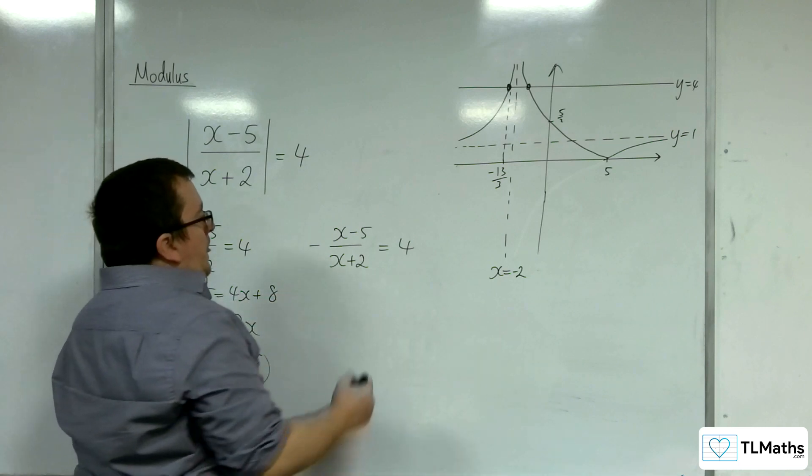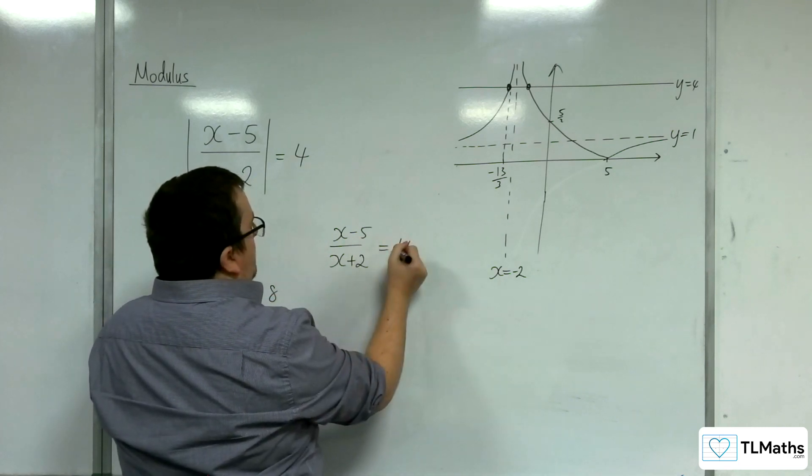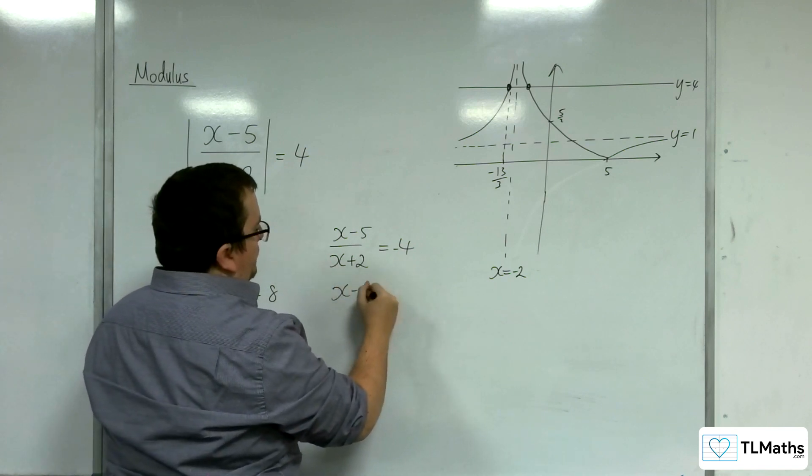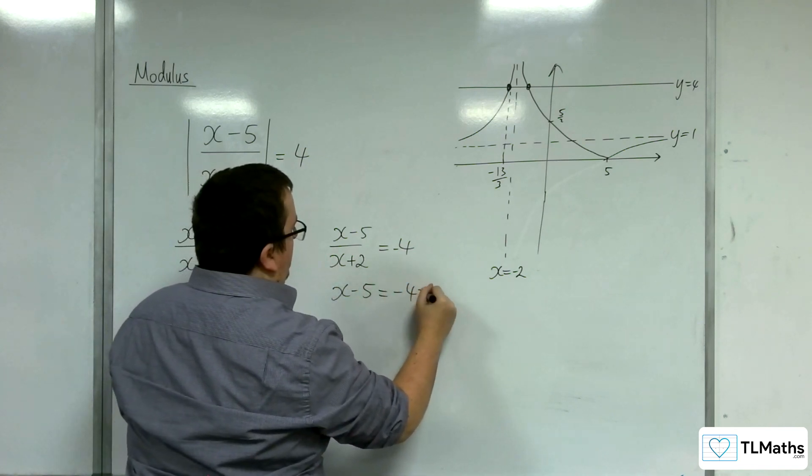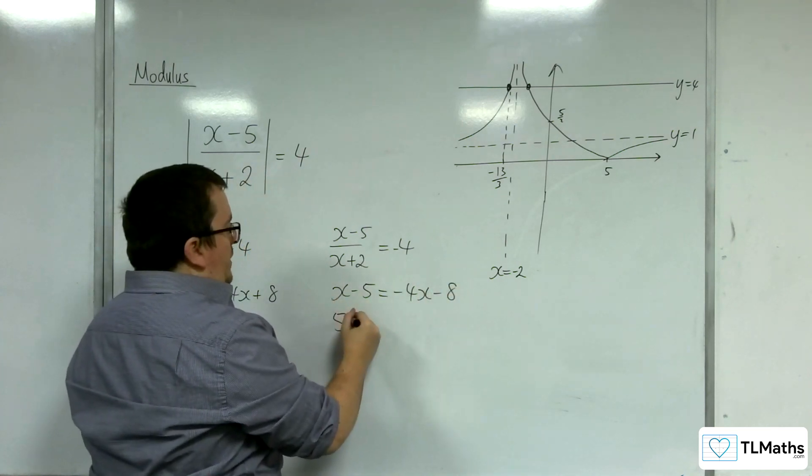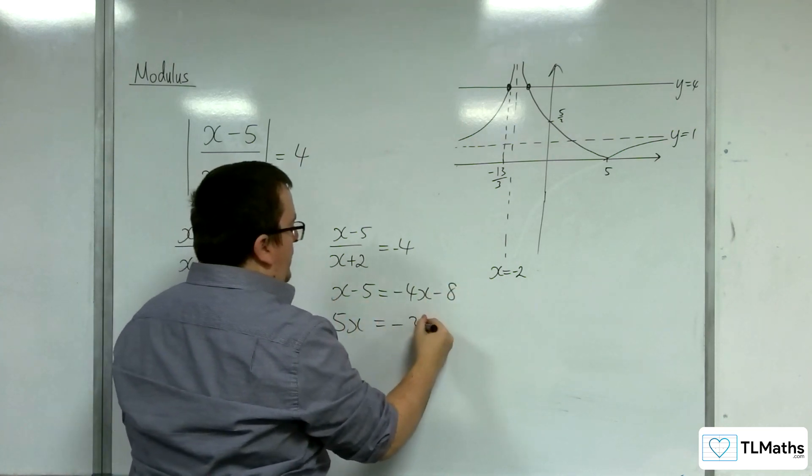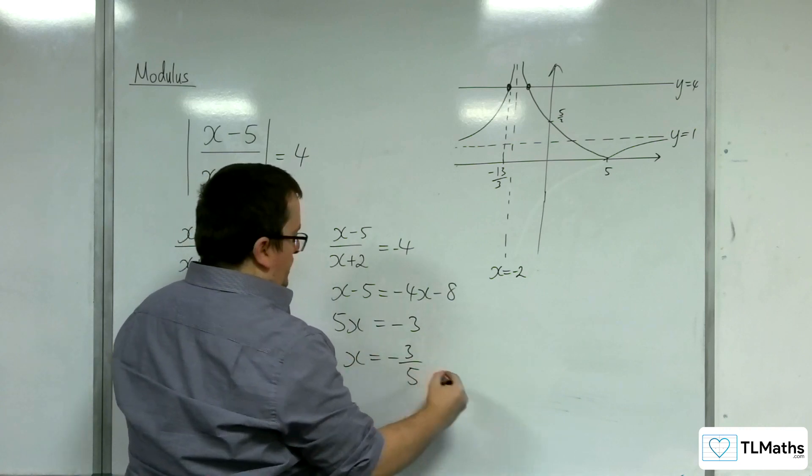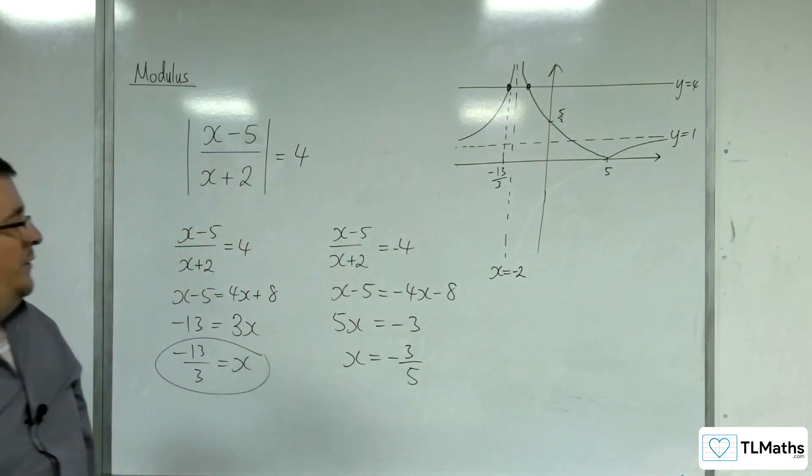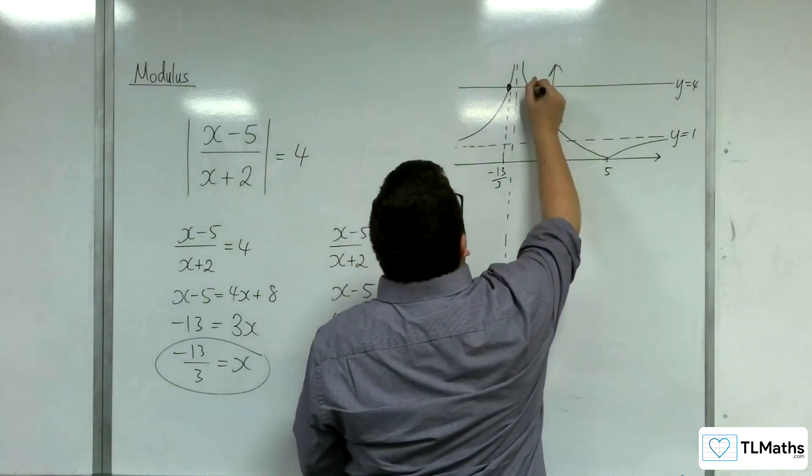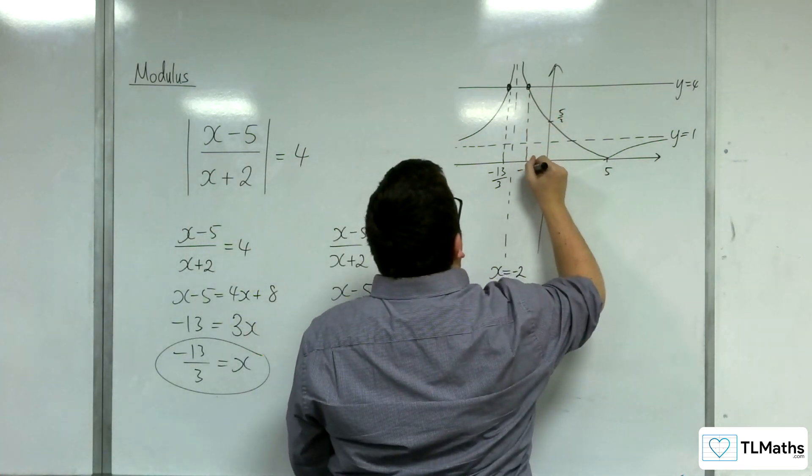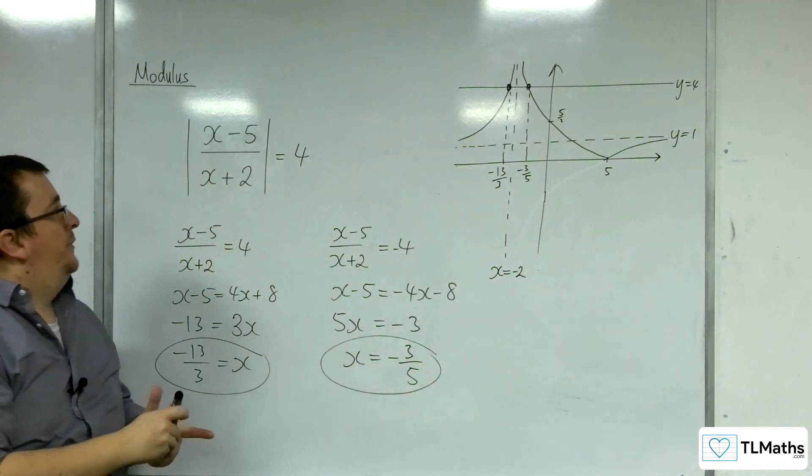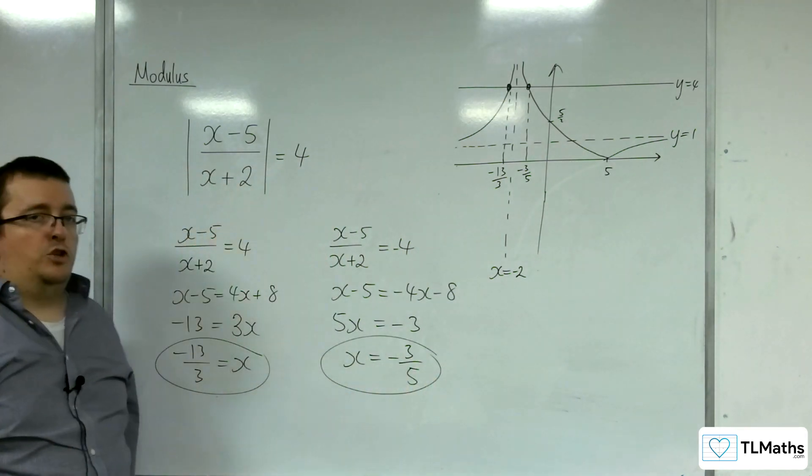Second solution. Let's multiply both sides by minus 1 first. Multiply it by the x plus 2. So, minus 4x minus 8. Add the 4x to both sides. Add the 5 to both sides. And then divide it through by 5. So, x is equal to minus 3 fifths. That's that point there. So, these are the two solutions to this modulus equation.